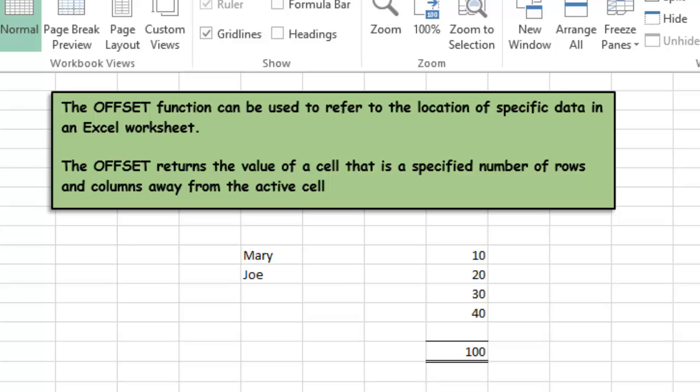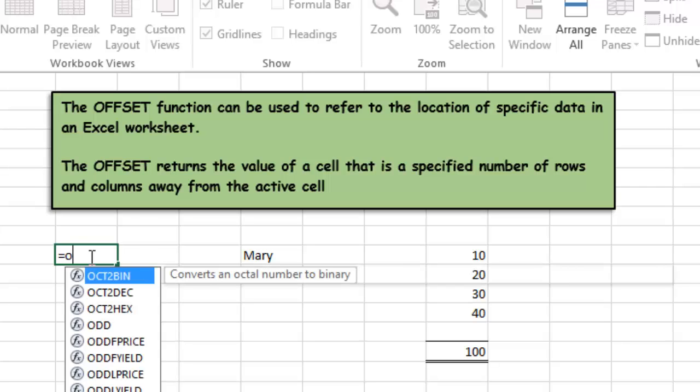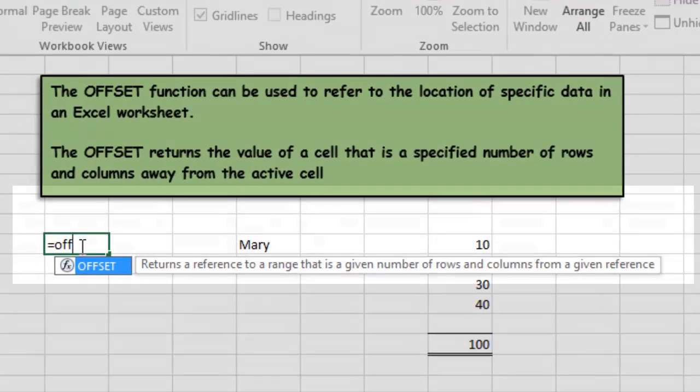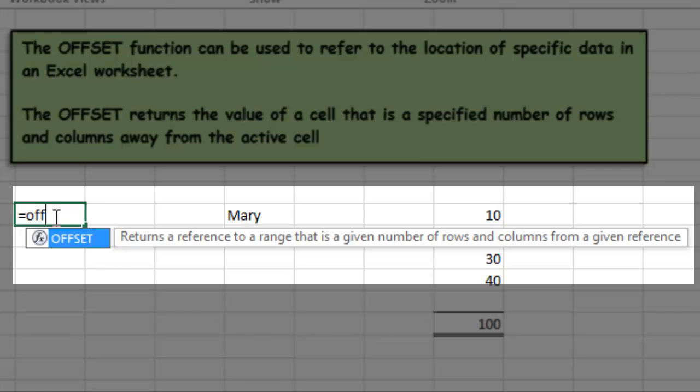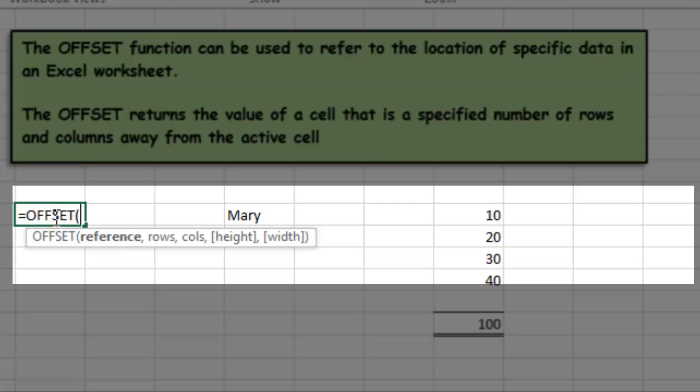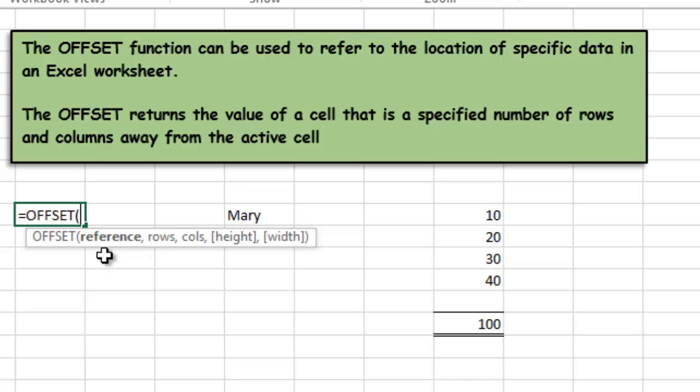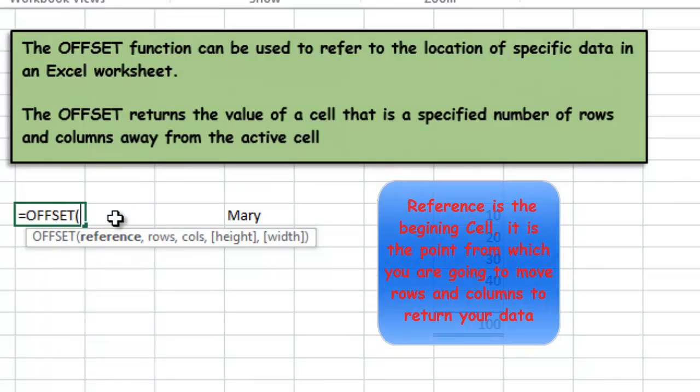Let's quickly look at an example of the OFFSET function and the formula itself. We always start with equals OFFSET. OFFSET returns a reference to a range that is a given number of rows and columns from a given reference. The first thing it's looking for is a reference, and the reference is the beginning cell. I'm going to start in cell B10, my active cell.